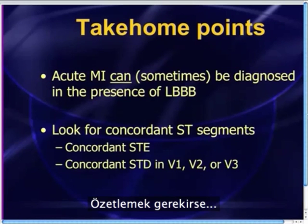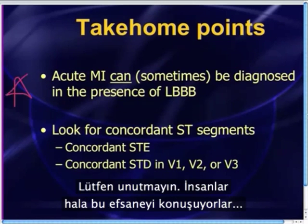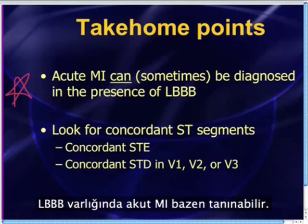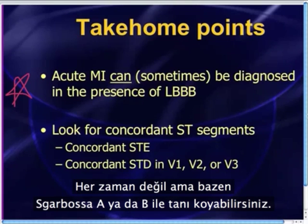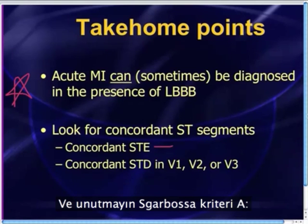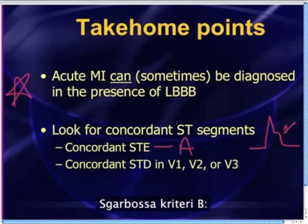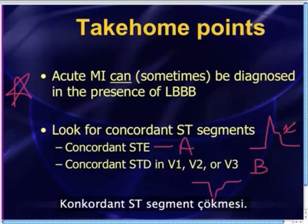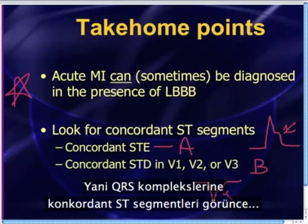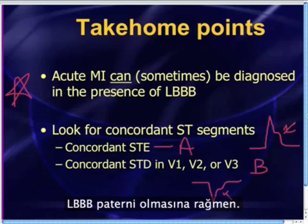Just to finish things up — please remember, people still talk about this myth. Acute MI in the presence of a left bundle can sometimes be diagnosed. Not always, but sometimes you can diagnose it based on Sgarbossa A or B. Sgarbossa criteria A is concordant ST segment elevation; Sgarbossa criteria B is concordant ST segment depression in V1, V2, or V3. When you see concordant ST segments with QRS complexes, you've got to worry about that patient even though they have a left bundle branch block pattern.